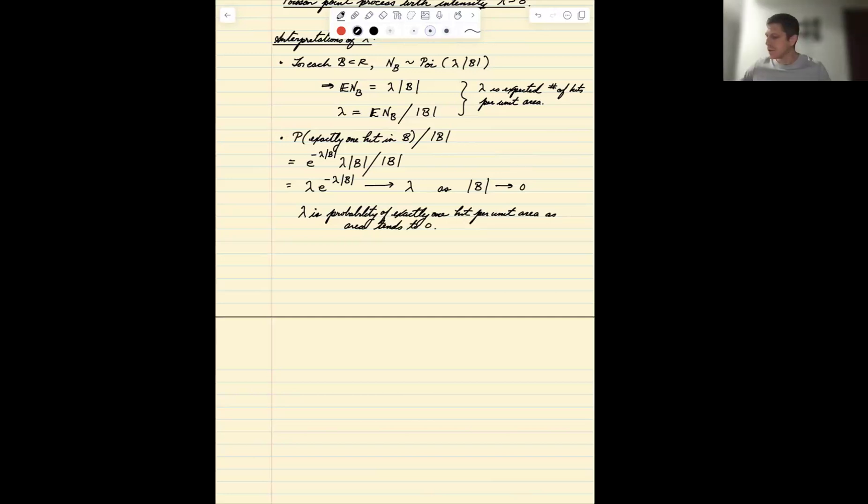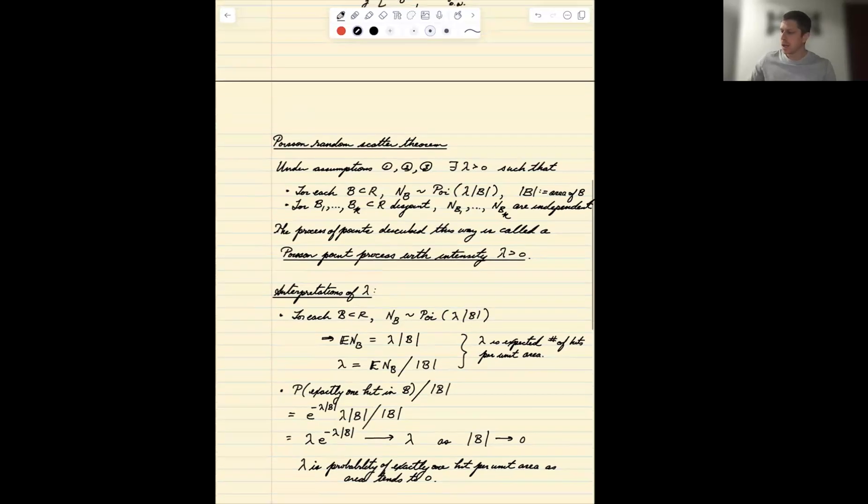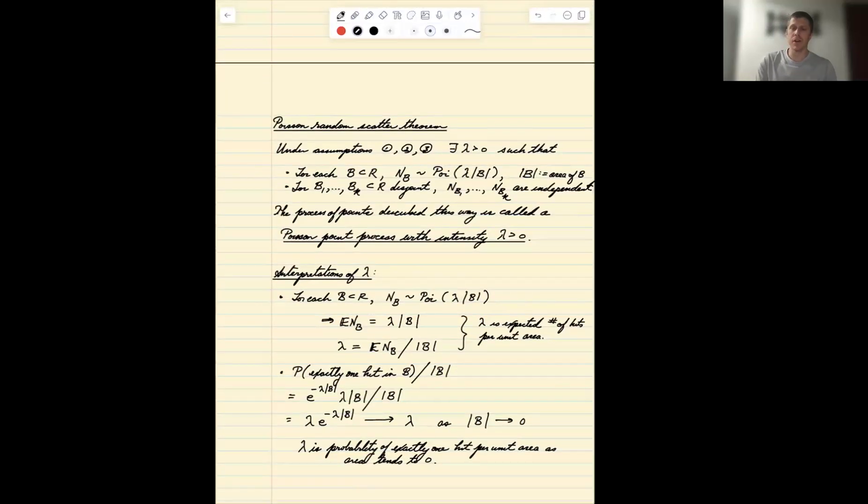So those are some interpretations of how we think about this. The reason why we want to have those interpretations is because we eventually want to use this in applications. In order to use this in an application, we have to validate that the assumptions are valid, that they make sense in a given situation. So we have to have enough intuition about what those assumptions mean and what they imply in order to assess whether they're good to make. Next thing we're going to come back and what we'll do is go through a sketch of the proof of this random scatter theorem to try to continue to develop that intuition.